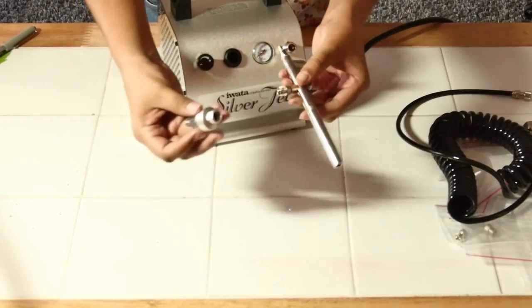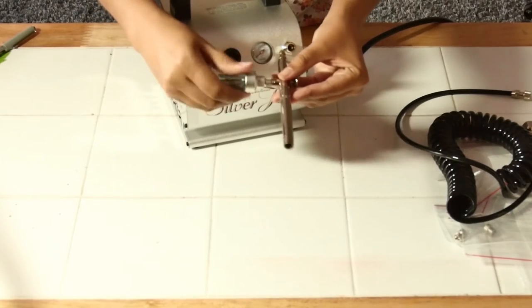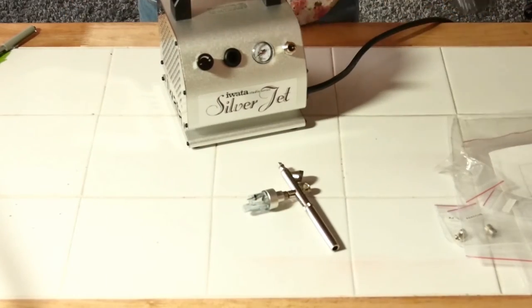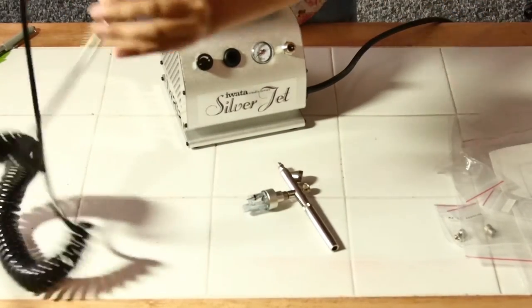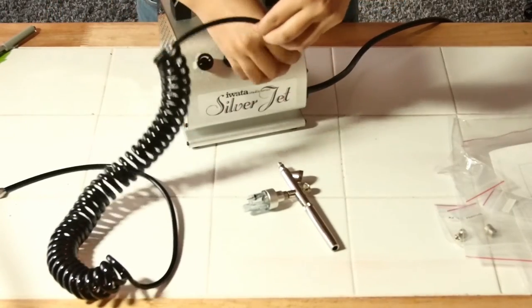Then you connect the filter onto this. The two ends are different, the bigger one's for the compressor. So that goes on here.